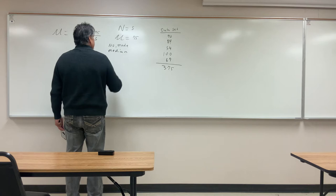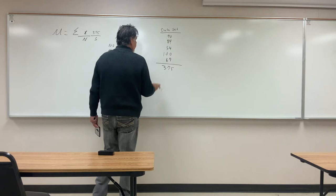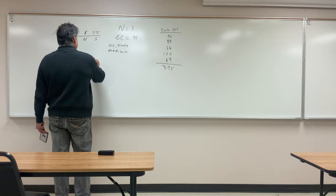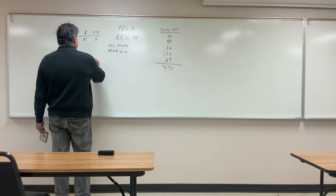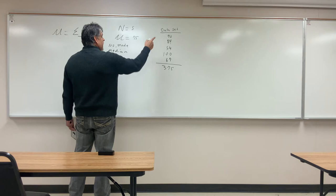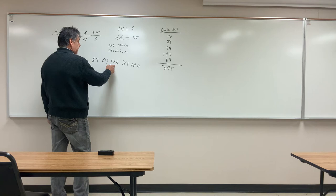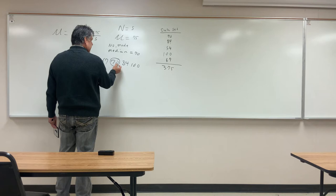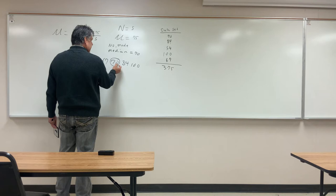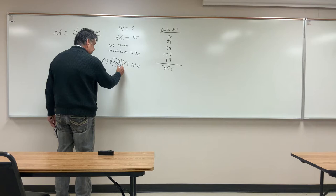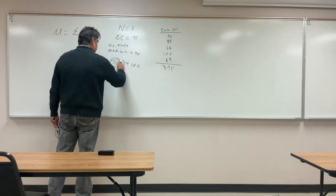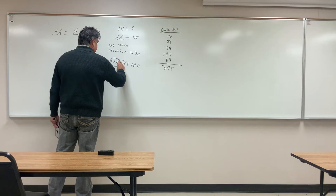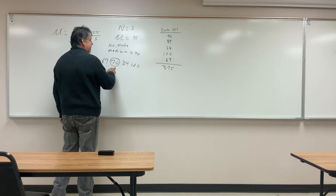The median is our middle value. If I take this data and rank it from low to high: 54 is our smallest number, then 67, then 70, then 84, and 100. I find that my middle value is 70, so 70 is going to be my median. Now if I had an even number of values, I would take the two middle numbers, add them together, and divide by 2 to get the middle value.